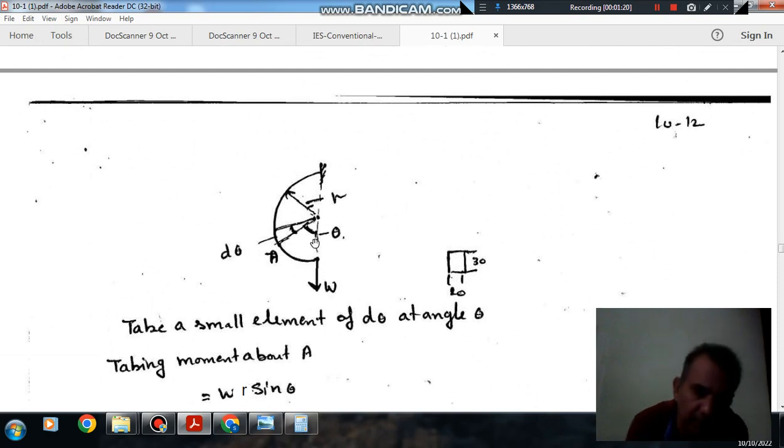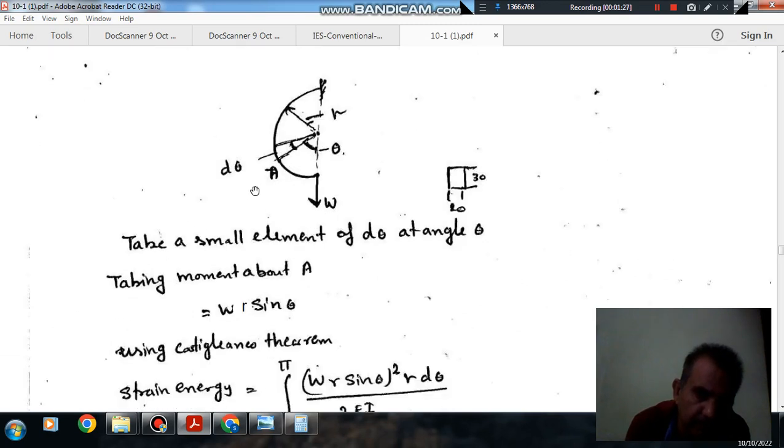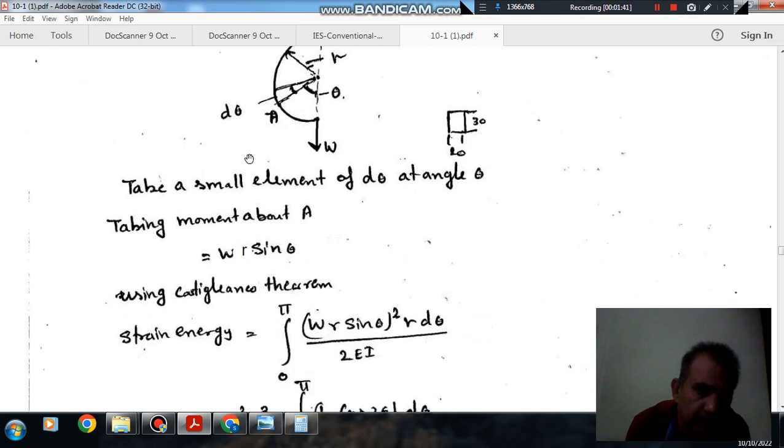Now take a small element, this element d theta at an angle theta from this vertical axis. If we take moment about this point, this distance will be R sin theta because radius is R and this angle theta. So this distance will be R sin theta, so moment will be W into R sin theta.